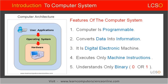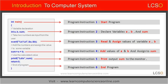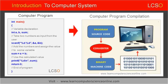Let us now move on to the next topic: important features of the computer system. The computer system has some important features. The first feature is that the computer is programmable. The term programmable means each task performed by the computer is directed by a set of instructions. This set of instructions is called a computer program. The computer program directs the computer system to perform specific operations. In other words, the computer will perform the task only as per the program instructions.